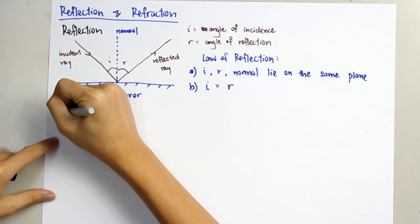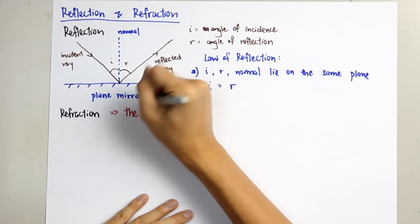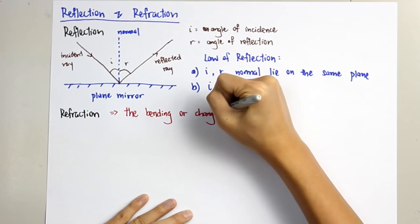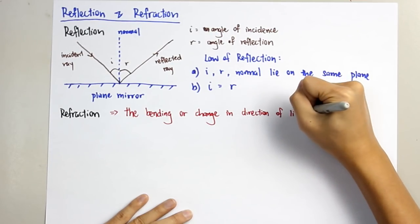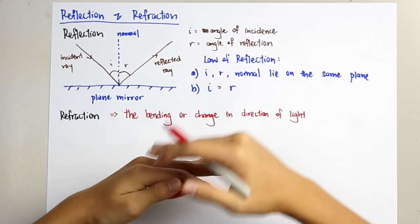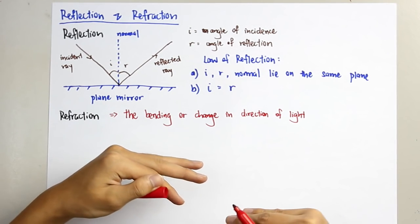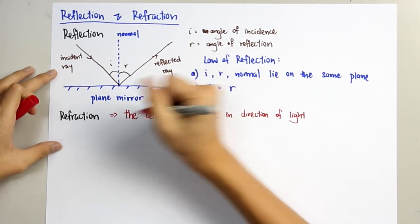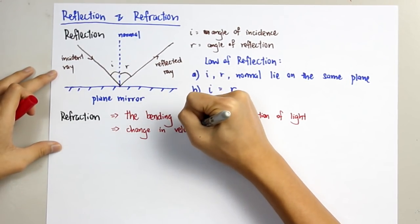Next, we move onto refraction. Refraction is the bending or change in direction of light as it enters different mediums. When you have two different mediums and light is directed onto them, it will refract. So why is there a bending or change in direction of light? The condition for this is when there is a change in velocity of the light.